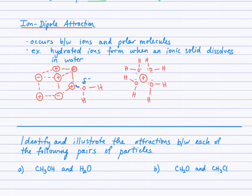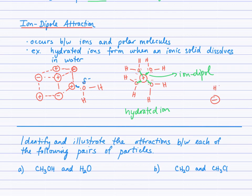The ion-dipole attraction is indicated here in green, and these are hydrated ions. Does it form when you have a negative ion? Absolutely. Now the water molecule needs to orient so that the partially positive end — the hydrogen end — points towards that negative ion. So yes, this ion is surrounded by multiple water molecules, all experiencing that ion-dipole attraction.